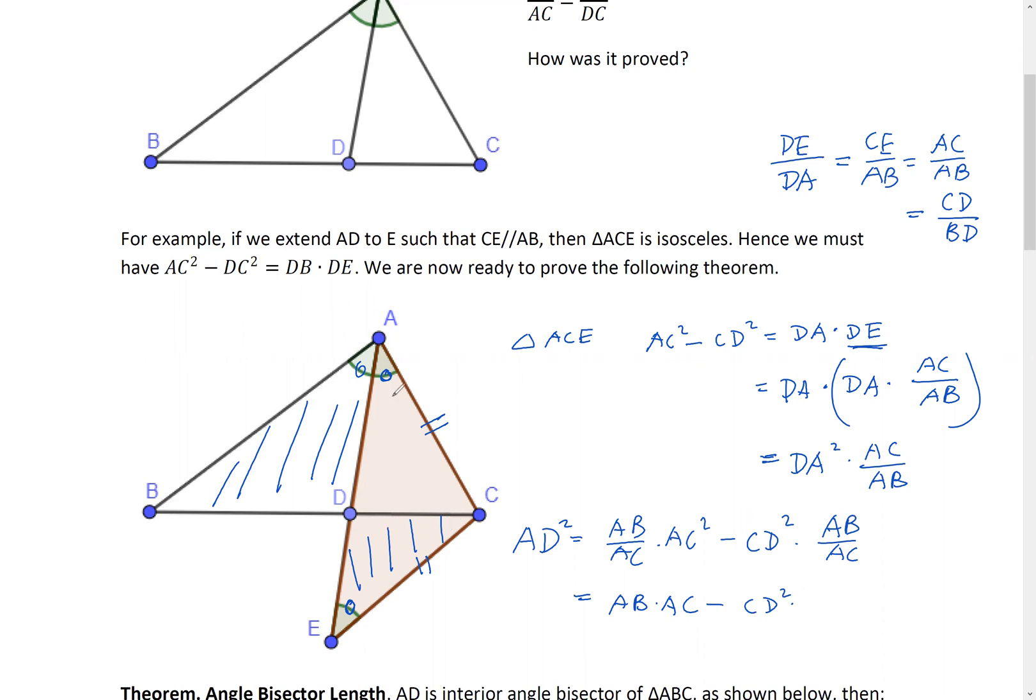Seeing CD and then all the AB and AC, it makes me want to replace AB over AC by BD over CD. AB over AC equals BD over CD. The angle bisector theorem. So, AB times AC minus CD times BD.